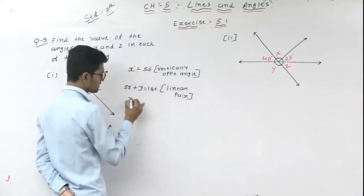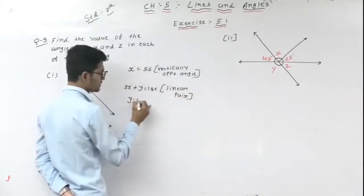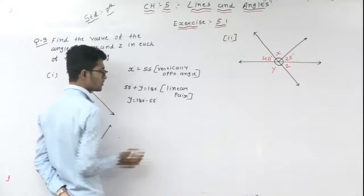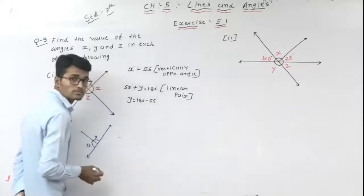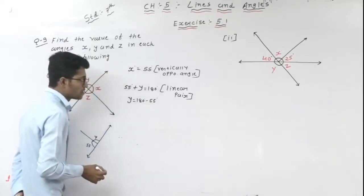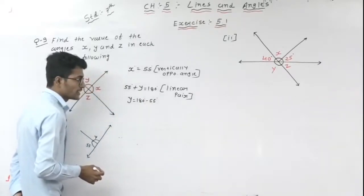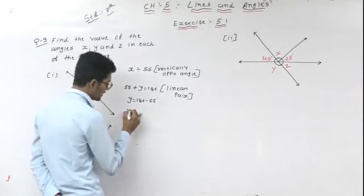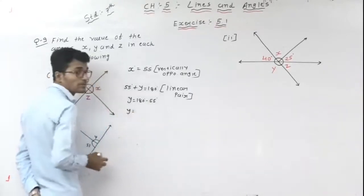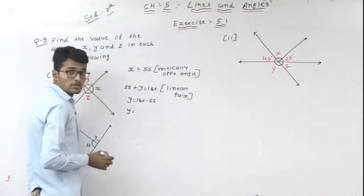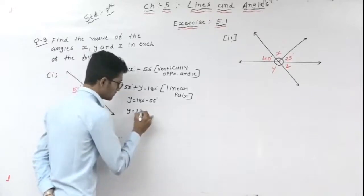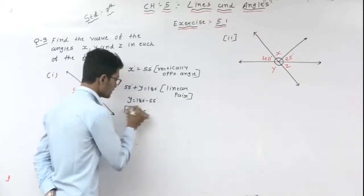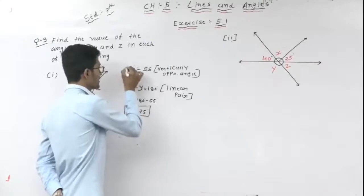Now moving 55 to the other side: Y is equal to 180 minus 55. So Y is equal to 125 degrees.